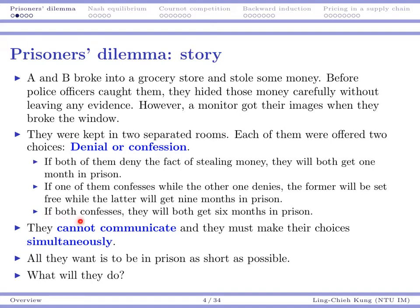Finally, if both of them confess, then both of them will get six months in prison. Here six is lower than nine because in the second case, I deny but my friend confesses — that means there is even evidence showing that I am lying to the police officers, so that's why I need to be put in jail for nine months. So these are the offers.